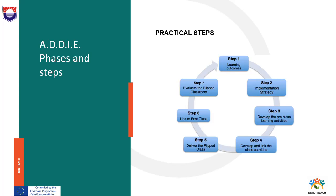The macro level represented by the ADDIE methodology could be concretized in the following practical steps: identify and define key concepts, clear learning outcomes and success criteria; plan the implementation strategy; develop pre-class learning activities related to recall and comprehension as well as checkpoints for interactivity and feedback; develop in-class activities related to apply and analyze levels and link them to pre-class activities with a focus on student motivation and building accountability; deliver your flipped class and related activities and review the learning outcomes; make explicit connections between the topic and post-class activities and assessments; evaluate the flipped classroom by monitoring the level of student achievement and participation; and collect feedback to make appropriate changes if needed.